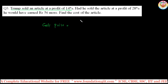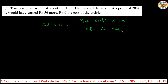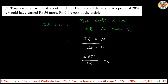This type — given original profit, a higher profit scenario, and extra amount — to find cost price directly, use the formula: cost price equals more profit amount into 100 by difference in profit percentages. Here, more profit is 56, so 56 into 100 by (28 minus 14), which is 5600 by 14, giving 400 rupees. So the cost price of the article is 400. This is the formula instead of taking let cost price x and expanding.